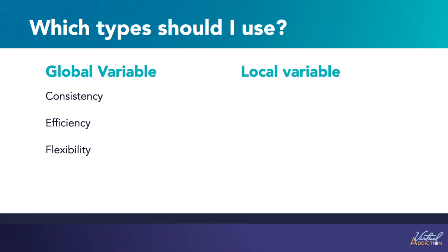Local variables, also known as scoped variables, can be useful for several reasons as well. They help make your CSS more modular and reusable by allowing you to define a set of styles for a particular element or component. By defining a local variable within a selector, you can easily reuse that variable throughout the selector and any nested selectors. Local variables also make your CSS code more maintainable, providing a clear and concise way to define styles — you can easily update styles for a particular element or component without affecting other parts of your code.